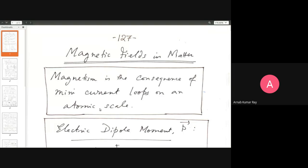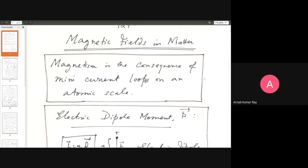Let me briefly recall: we began a new topic on magnetic fields in matter. Prior to that, we had finished some basic ideas of electromagnetic theory — Faraday's law, Ampere's law, Maxwell's correction to Ampere's law. Now what we shall do is look into the behavior of magnetism in material medium.